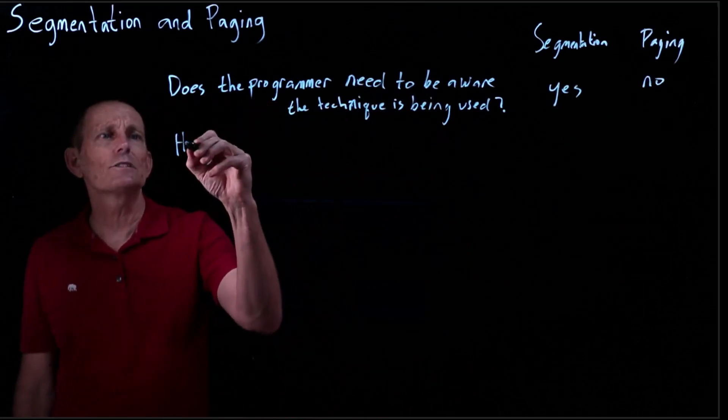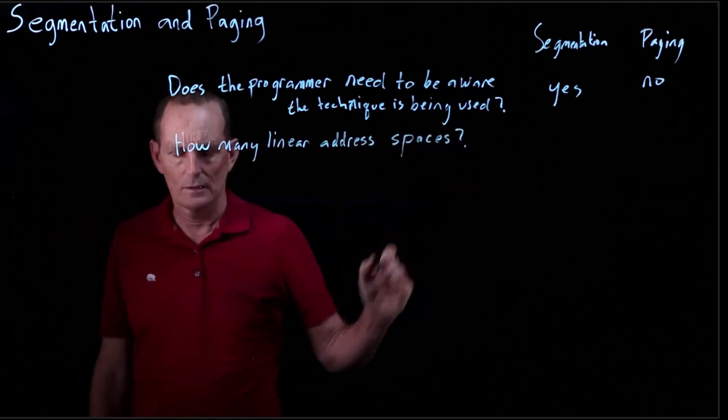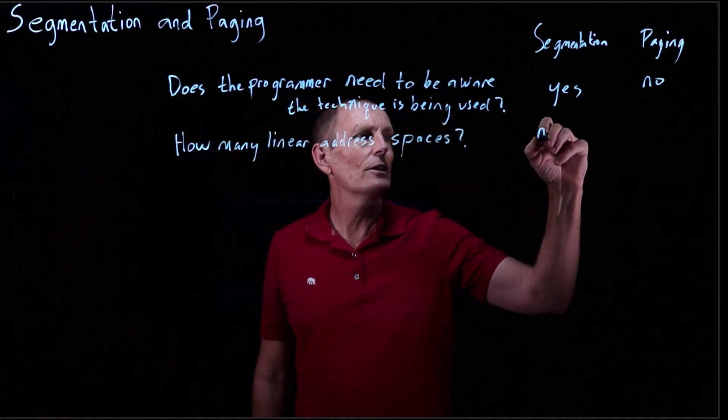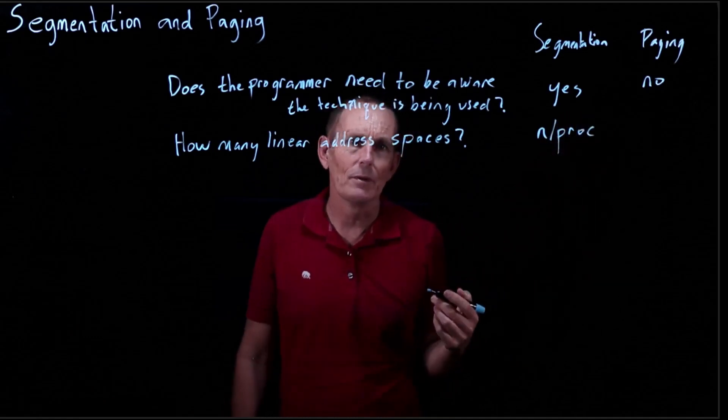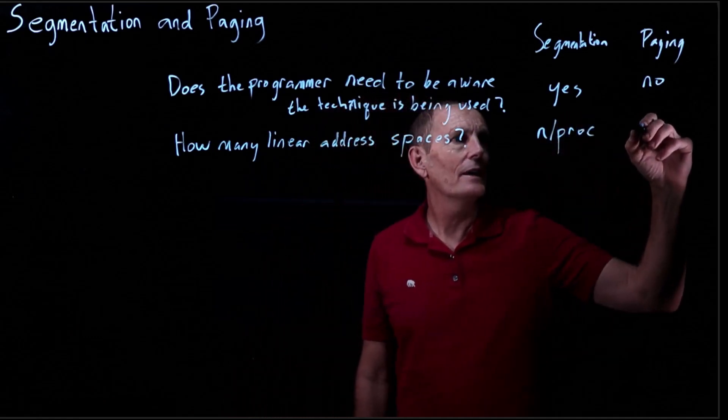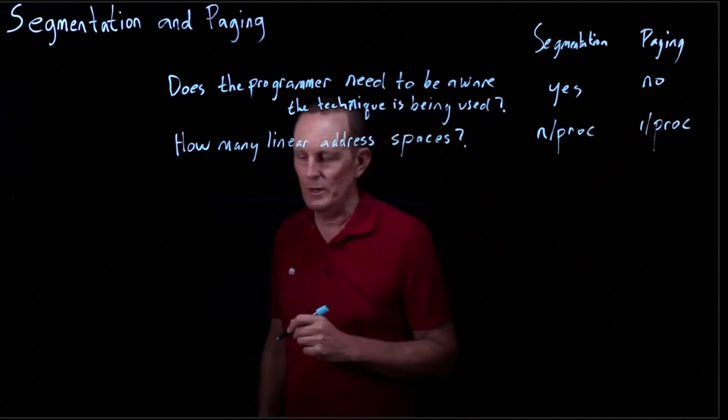Another question, how many linear address spaces? For segmentation, we have n per process, where n is the number of possible segments, and for paging, it's one per process.